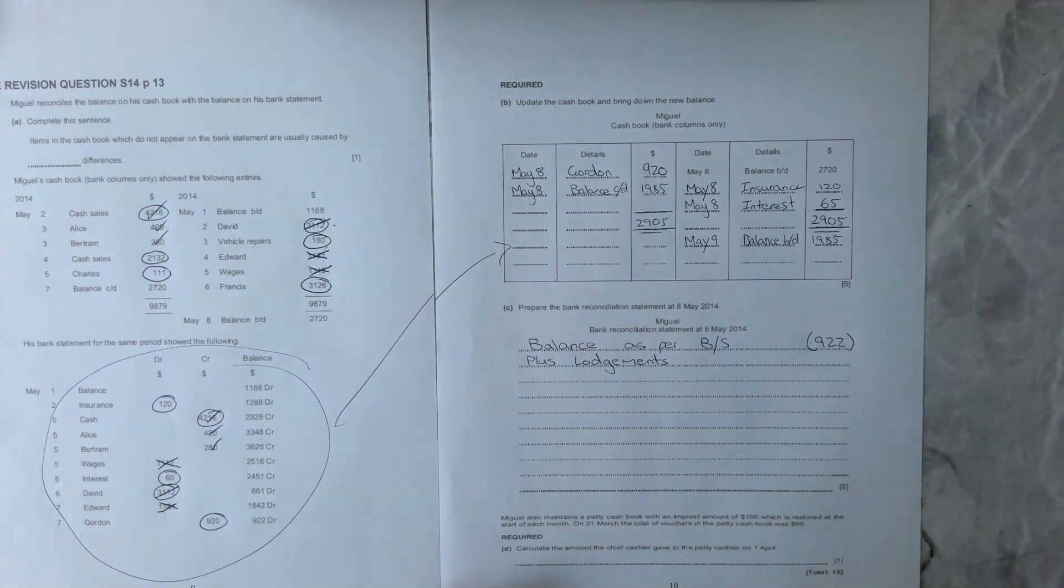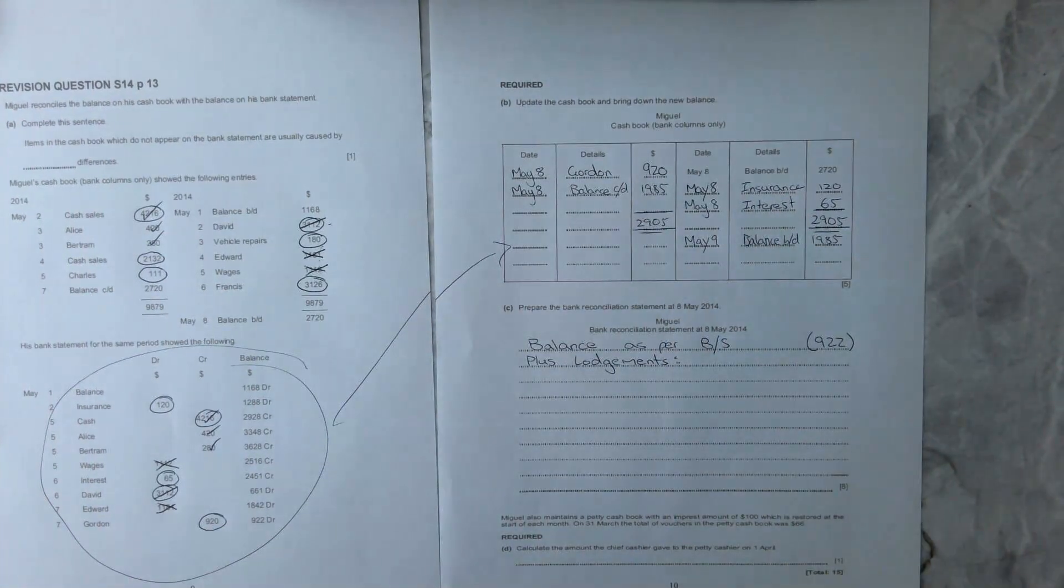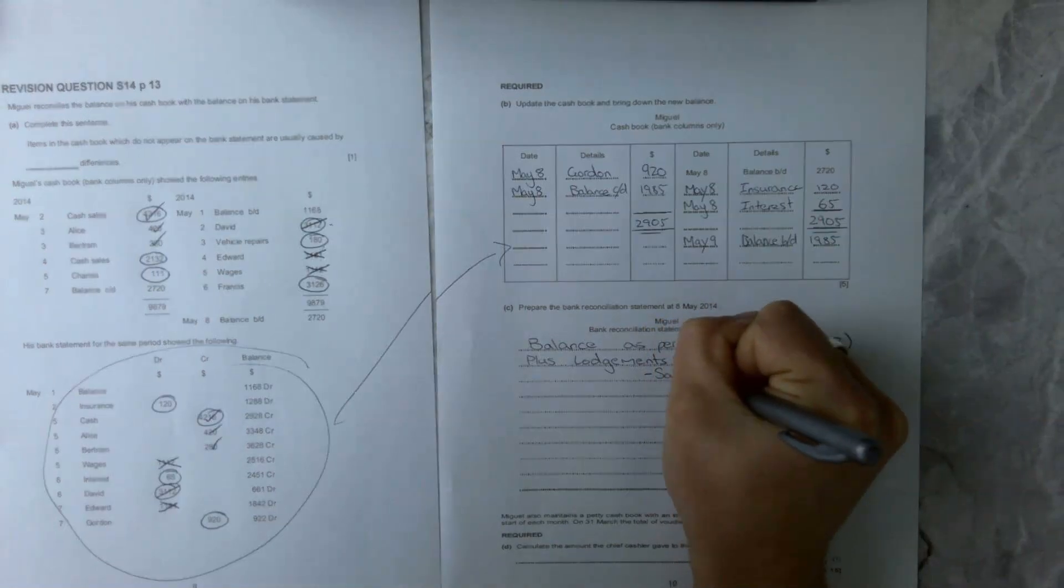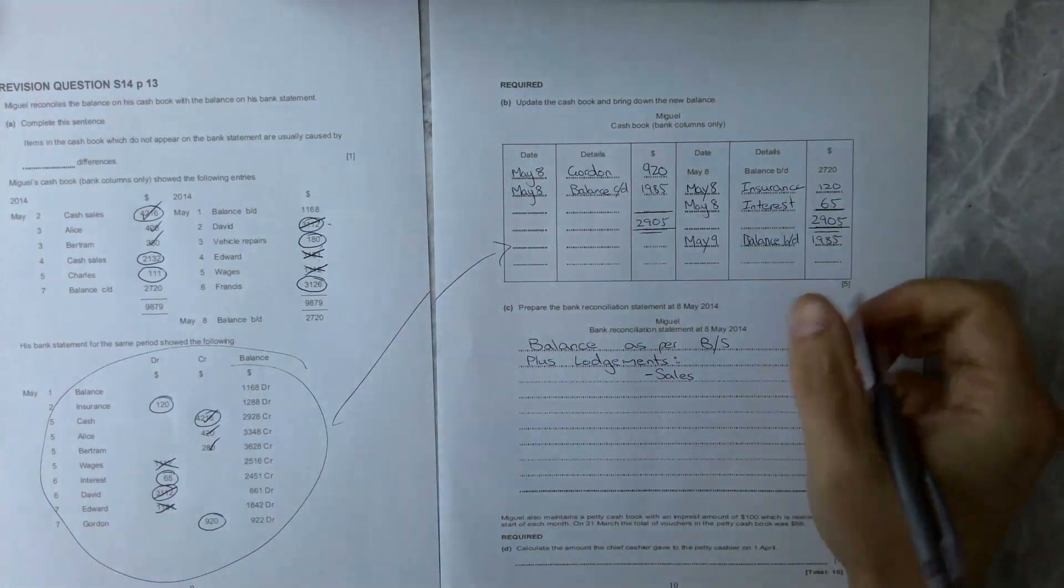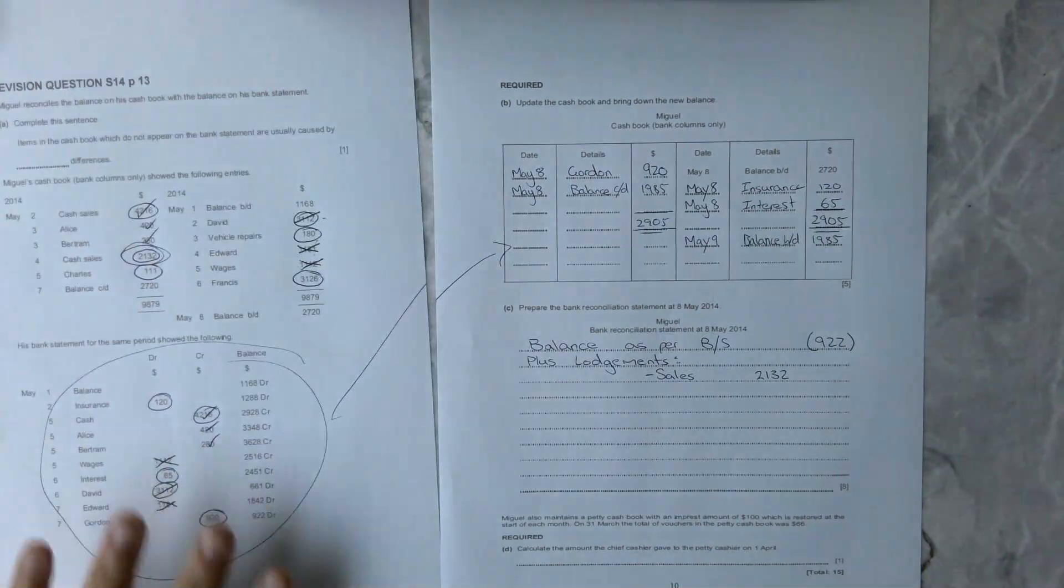We are going to plus lodgements. Some people call lodgements amounts not yet credited. Lodgements is an olden day term and that's why I love it because it is the traditional term. We are going to go sales.